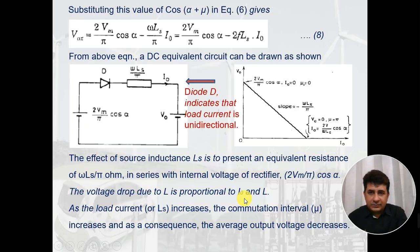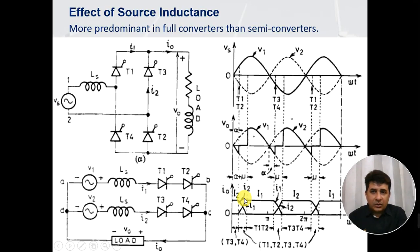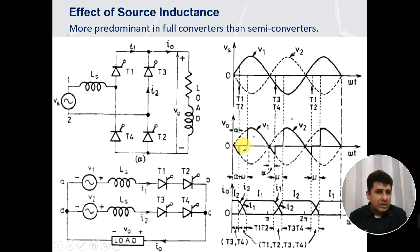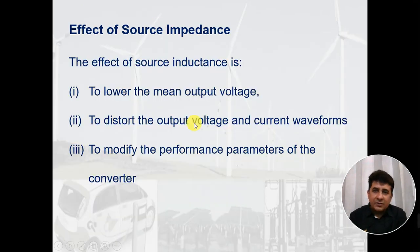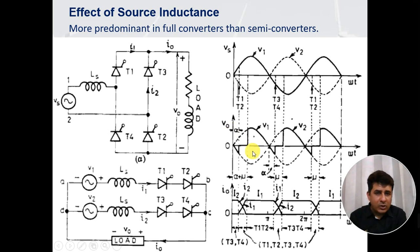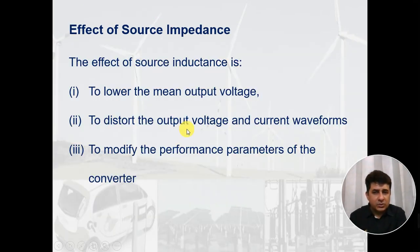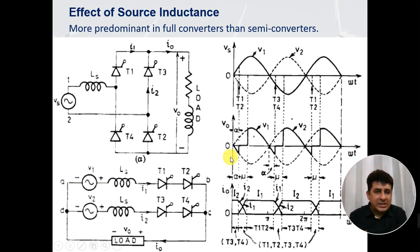The effect of source impedance is to lower the mean output voltage. During the overlap period, the output voltage is reduced to zero, so the average voltage is reduced. The second effect is to distort the output voltage and current waveforms — the voltage becomes zero where it would otherwise have been positive. The third effect is to modify the performance parameters of the converter, since if the output voltage changes, the parameters are affected accordingly.